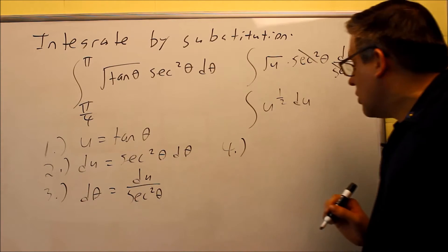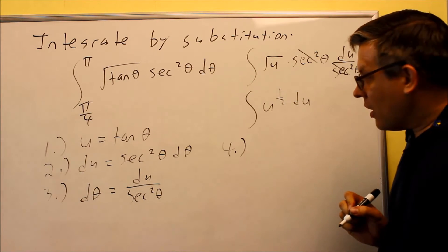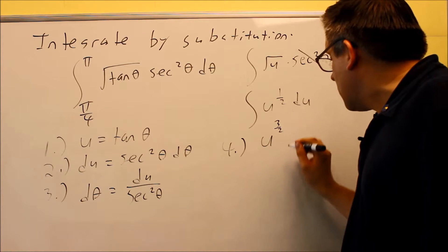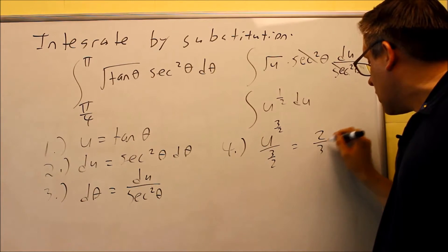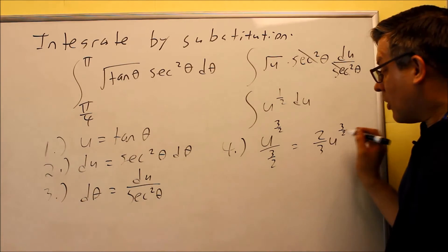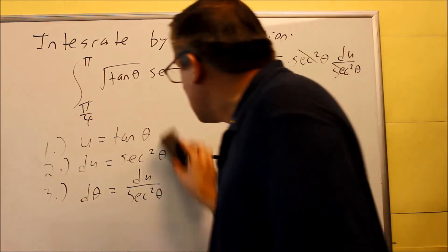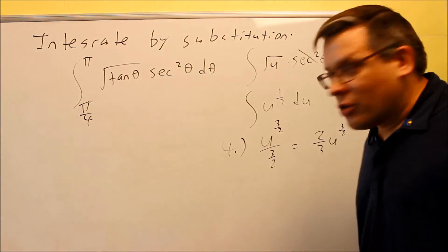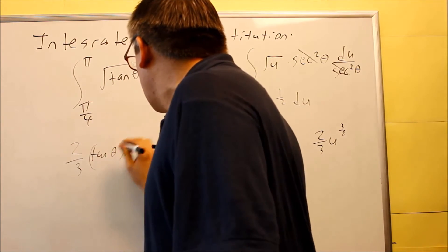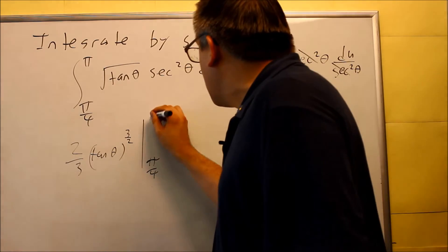We're now ready to integrate in step number 4. Everything matches — you should always have everything canceling out, with all u's and a du. When we integrate, raise the power by 1 and divide by the new power: we get 3 halves, divided by 3 halves, which we can write as 2 thirds u to the 3 halves. The last part of step 4 is to plug u back in — we put tangent theta in for u, raising tangent theta to the 3 halves power.